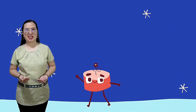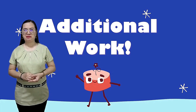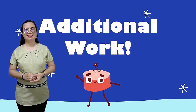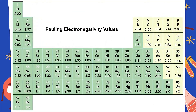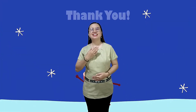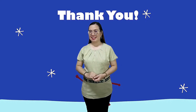I hope you enjoyed our class today. Before we end, I'm going to give you an additional activity: choose three combinations that will result in ionic bonding — you may use the given electronegativity values on the next slide. Good luck! And that's the end of our discussion. Again, this is Teacher Janet. See you again in my next class.